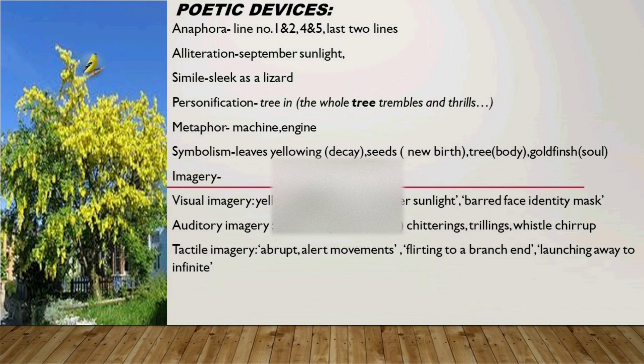Some consider Laburnum Top to have autobiographical connotations, as the poet's reflection on his relationship with Sylvia, his wife. Here, the goldfinch is symbolic of Sylvia, who entered his life smooth and abrupt, leading to thrill and excitement. She eventually revealed her barred face — the mask. And in her death, he was left emptier than ever before, spiritually lifeless.